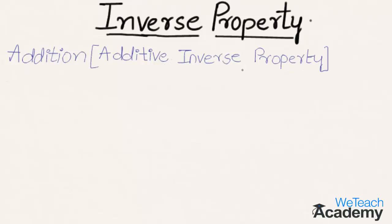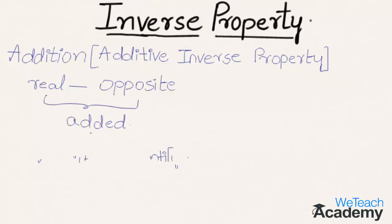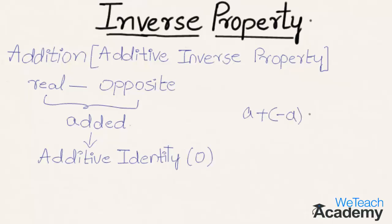This property states that for every real number there exists another real number called its opposite, such that when they are added together you get the additive identity, that is 0. So we can say that a plus its opposite, that is minus a, equals 0. Here a is the real number and minus a is the opposite of a. Minus a represents the opposite or the negation of the number a.